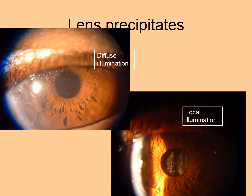Here is another example where diffuse illumination does not show the keratic precipitates on the lens, whereas focal illumination shows them up very clearly.